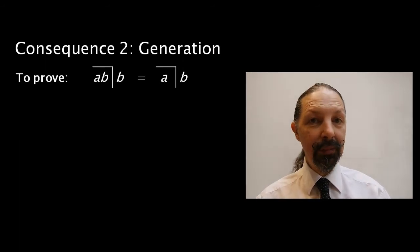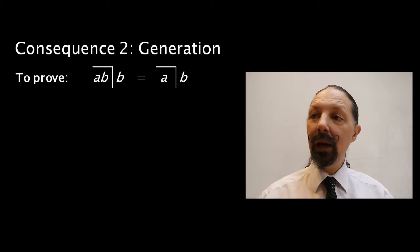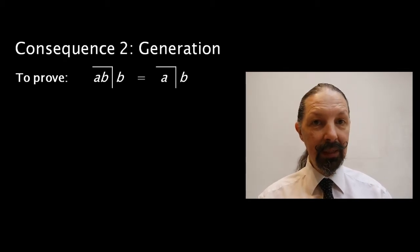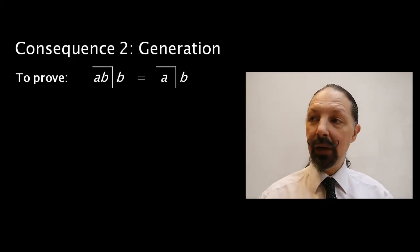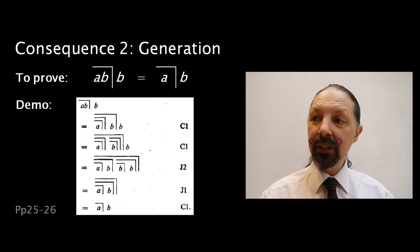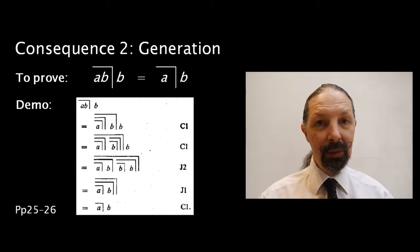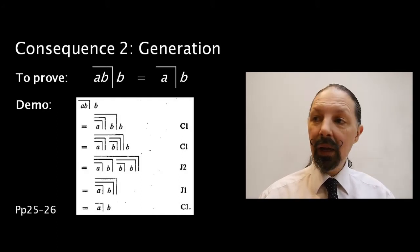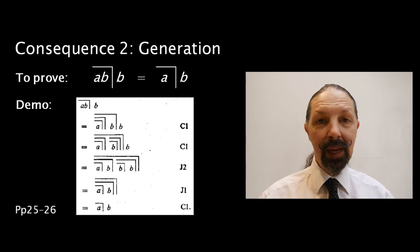This is about generation. And our job is to prove that AB mark over to B is equivalent to A mark B. So, here's the demonstration that's in the book. I'm going to take you through it step by step, so you can see exactly how this is proven.